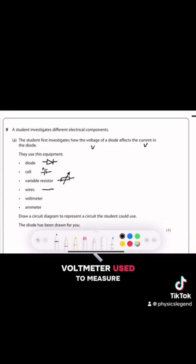Voltmeter is used to measure voltage or potential difference and it's just a circle with the letter V. Ammeter is used to measure electric current and is represented as a letter A in a circle.